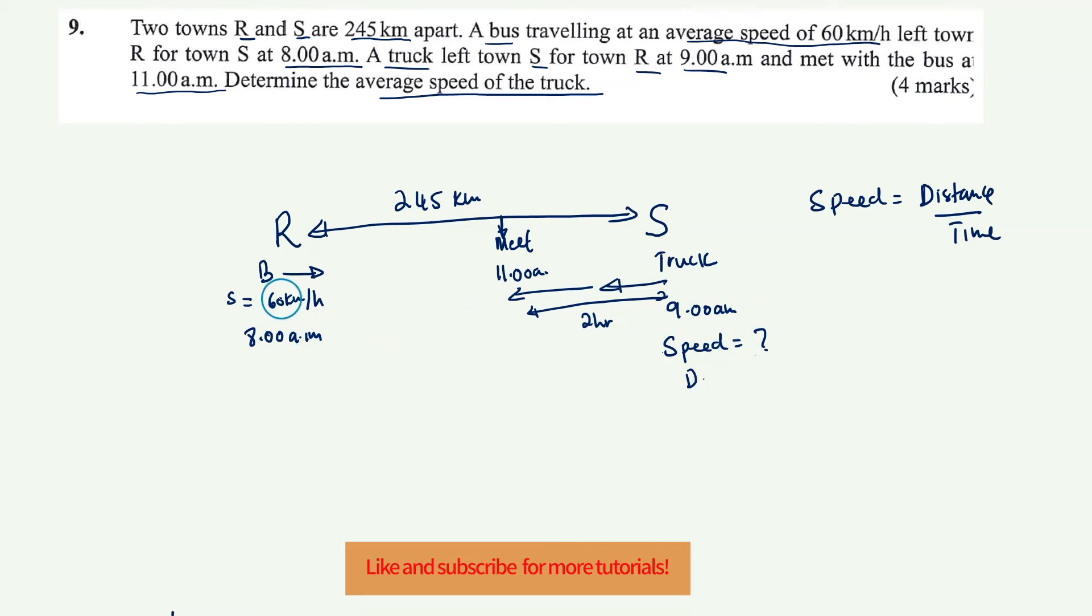Or perhaps I can use the bus to help me find the distance. So the distance I need is from there to there, from town S to the meeting point. I need to know what the distance is. Now, if I can find what the distance is from R to meeting point, then I should be able to get what this meeting point distance to town S is.